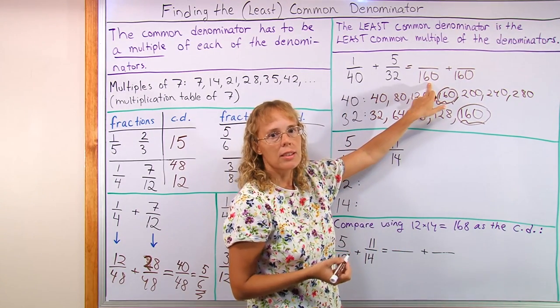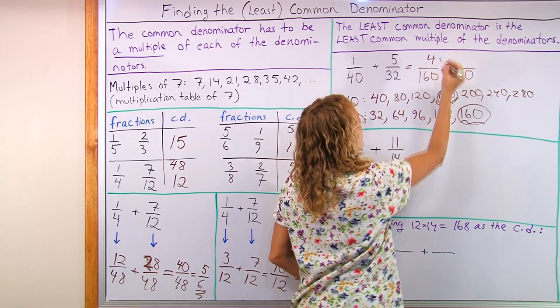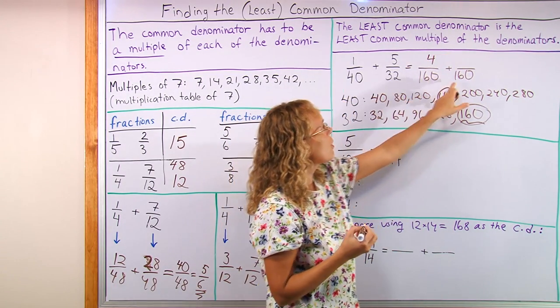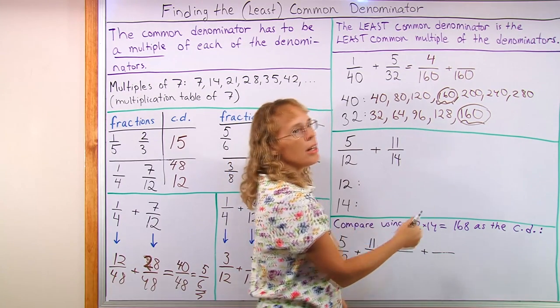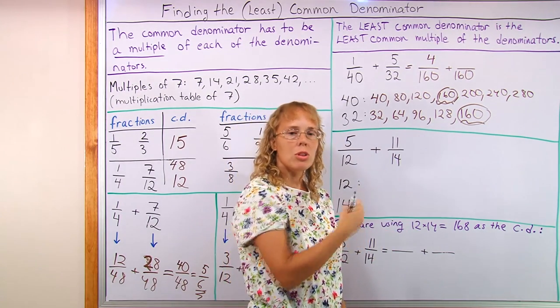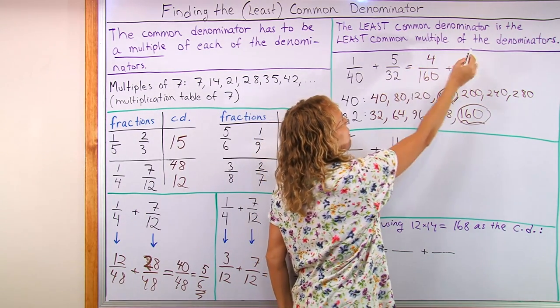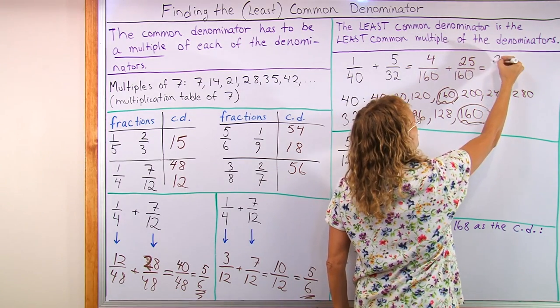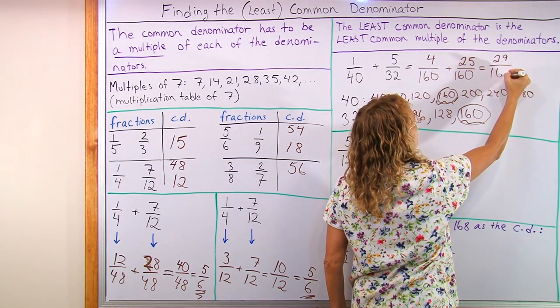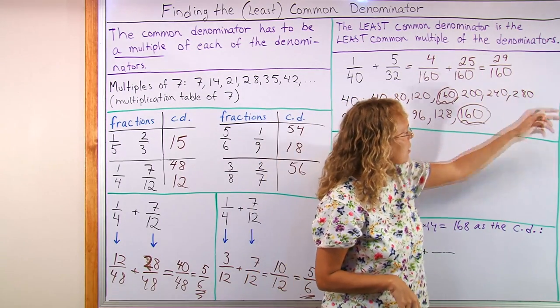Now, 40 goes to 160 four times. So I go 4 times 1 here. 32 goes to 160. Well, I can count here. 1, 2, 3, 4, 5. It was the fifth multiple of 32, so it goes 5 times. And therefore, I go this number times 5. And so my answer is 29 over 160. And that doesn't simplify because 29 is prime.